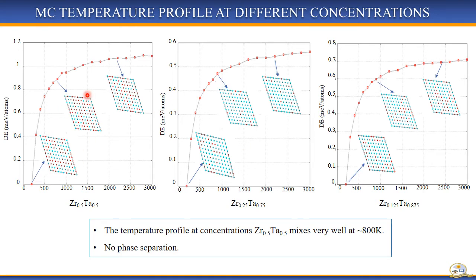Here is the temperature profile at 50% zirconium and 50% Tantalum. Here is 25% zirconium and 75% Tantalum. And here is 12.5% zirconium and 87.5% Tantalum. The systems mix very well and there is no phase separation since the energy difference is very small, which confirms the miscible constituent predicted by the binary ground state diagram.